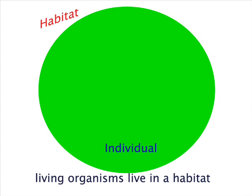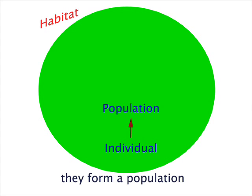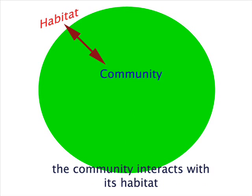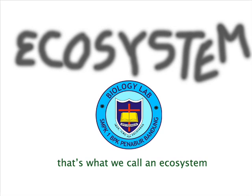Living organisms live in the habitat; they form a population. The population interacts with other populations as a community. The community interacts with its habitat, and that's what we call an ecosystem.